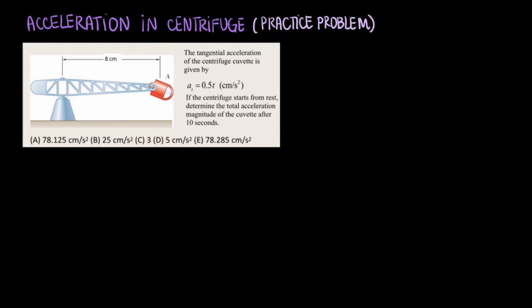Ok, so we want to find the magnitude of the linear acceleration, A. They gave us the equation for the tangential acceleration so we know we will likely use that. The most straightforward way to get this magnitude using the tangential component is through the square root of the normal component squared plus the tangential component squared. We know the radius is 8 centimeters and AT is 0.5 times t centimeters per second squared, and we want to find the acceleration at 10 seconds.